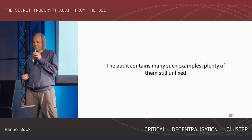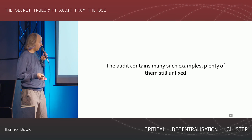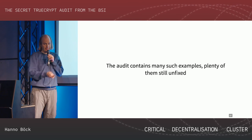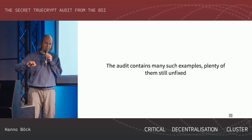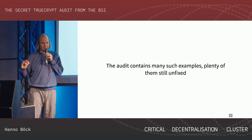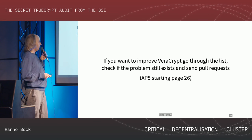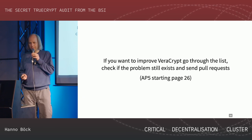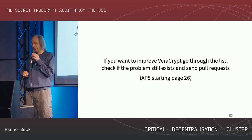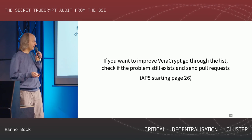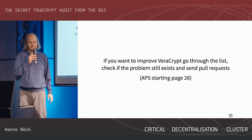For some of these issues, I sent patches to VeraCrypt and they applied them, but not all of them. There's a long list where the audit analyzed function by function and said whether each function is safe or whether there's key material that's not properly overwritten. So if you want to improve VeraCrypt, you can get these documents, look through that list, and send patches to VeraCrypt - they will be happy about that. It's in document AP5 starting at page 26.